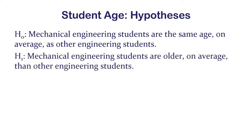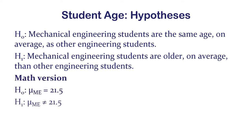The alternative hypothesis says mechanical engineering students are older on average — they come from a population with a higher age. In the math version I'm going to use 'not equals,' forcing a non-directional frame onto what is clearly a directional hypothesis as stated by Professor Johnson.